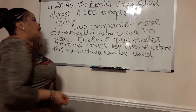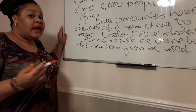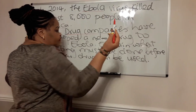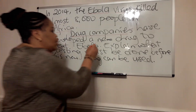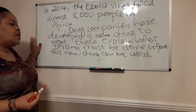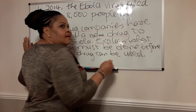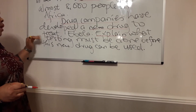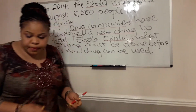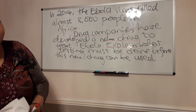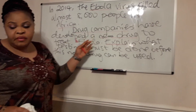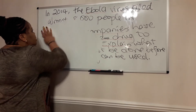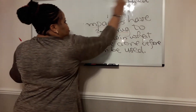In 2014, the Ebola virus killed almost eight thousand people in Africa — I'll underline 'Africa' just in case conditions of living in the area would affect the question. Drug companies — so there are drug companies — they make drugs, and they have now developed a new drug to treat Ebola. 'Explain' is the command word. I have read it twice and underlined the keywords. In order to have the space to write my answer, I'm going to wipe off the question — and obviously on a video you can pause it to look at it again.